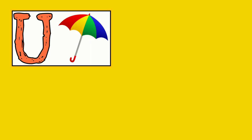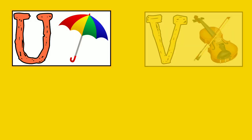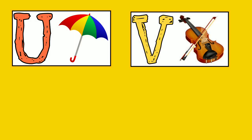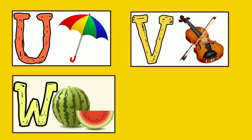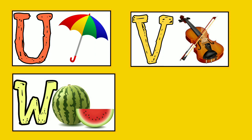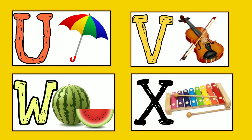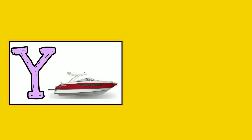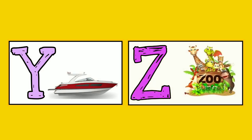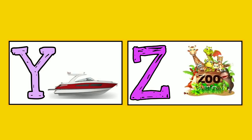U for umbrella, V for violin, W for watermelon, X for xylophone, Y for yard, Z for zoo.